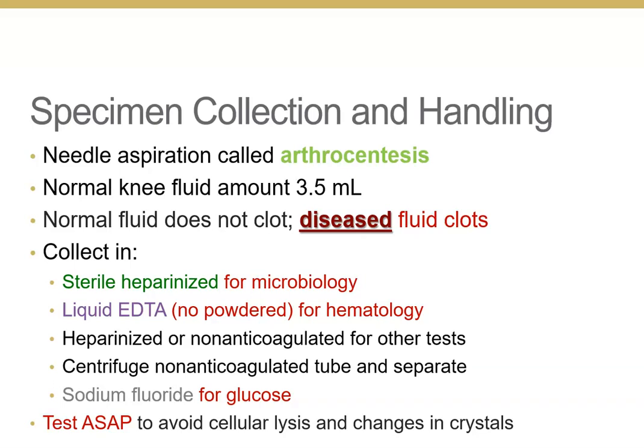Sodium fluoride is used if you're doing a glucose analysis, though that doesn't always happen on joint fluids. For other tests you can use either the heparinized fluid or a plain serum tube — no serum separator, just a plain tube. It's important to test all fluids as soon as possible so that cells don't lyse and crystals don't undergo changes.